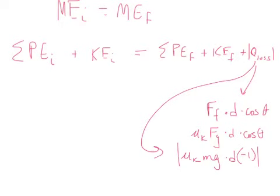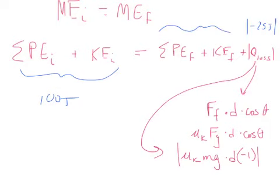We're seeing the connection between work and heat loss — that's what was important about that lab. The thermal energy increasing was Q_loss the whole time, but energy is still conserved. If the sum of potential and kinetic energy at the beginning was 100 joules and friction did 25 joules of work, there are 75 joules of energy left. The idea of conservation still holds true — energy before equals energy after.